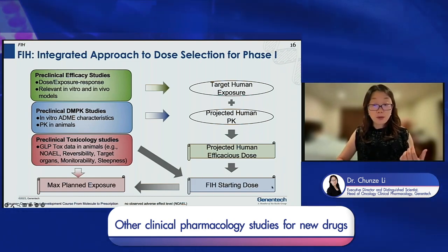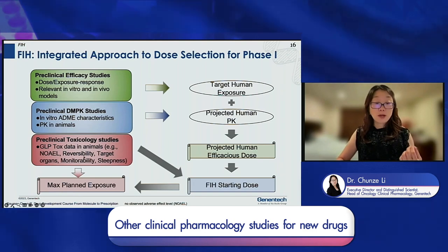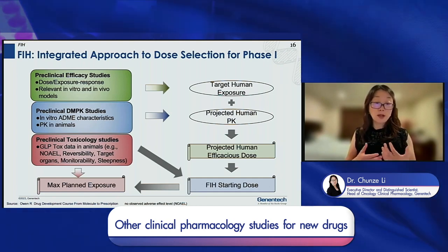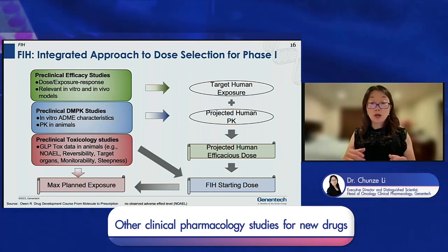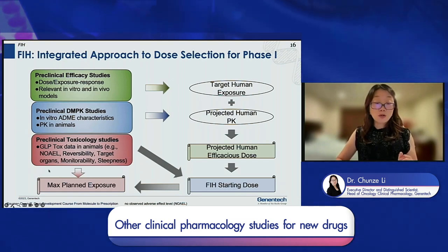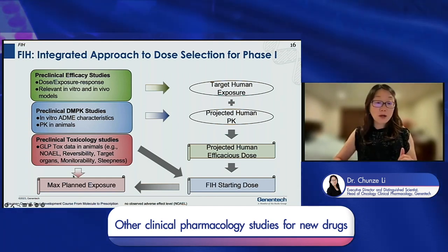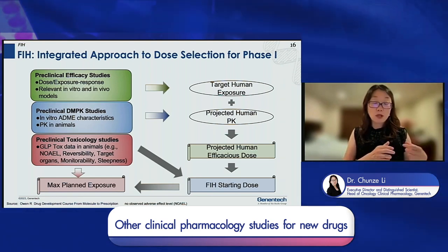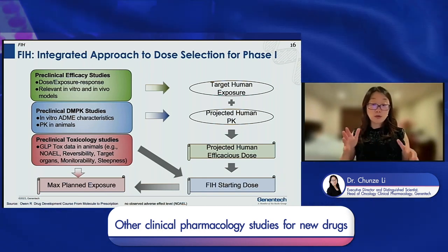The first in-human starting dose is mainly informed by preclinical GLP tox studies, including the NOAEL, and depends on the nature of safety findings — toxicity reversibility, monitorability, target organ, and steepness of the dose-response curve. For non-oncology programs, the animal tox studies also define the maximum planned exposure, which sets the potential maximum dose we can test in first in-human. By knowing these three doses, we can decide how fast to do dose escalations.